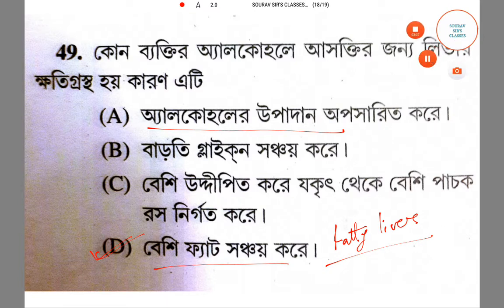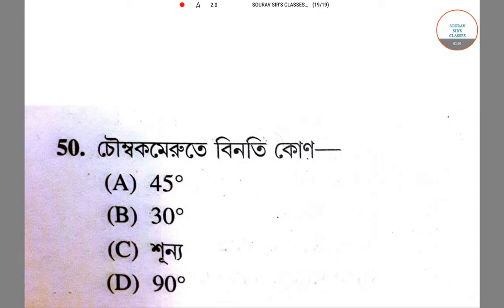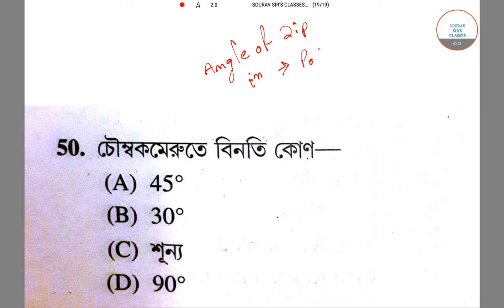The angle of dip at the poles is 90 degrees. Let's move to the next question.